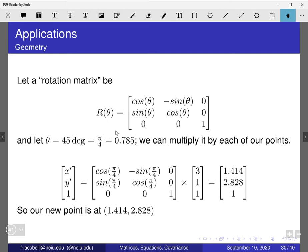Now, for example, if theta is 45 degrees, right? That in radians is π/4 right here, right? And that is the same as 0.785. We can multiply it by each of our points.